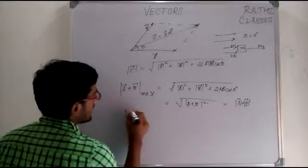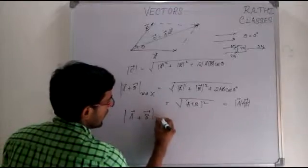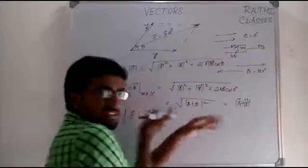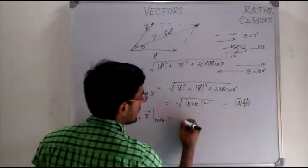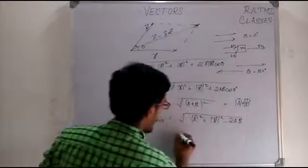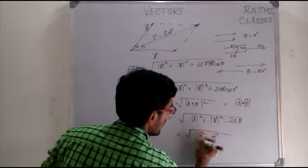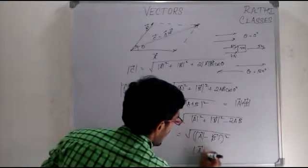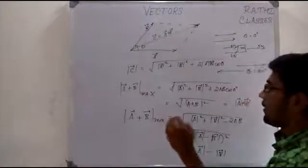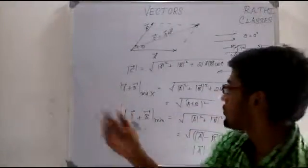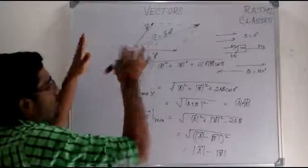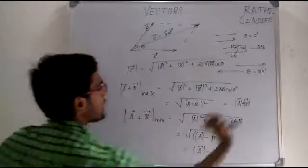Similarly, A plus B minimum occurs when theta is 180 degrees, so the two vectors are in opposite directions and partially cancel. In any other orientation — any theta ranging from 0 to 180 degrees — the magnitude of the resultant of A plus B will lie between A plus B and A minus B.